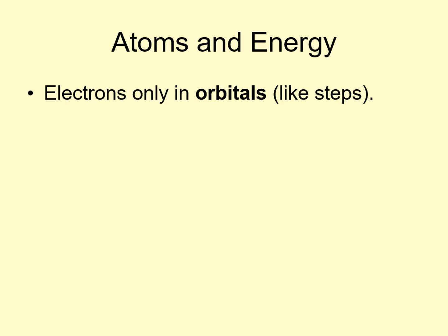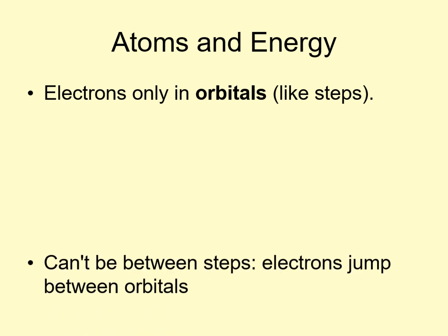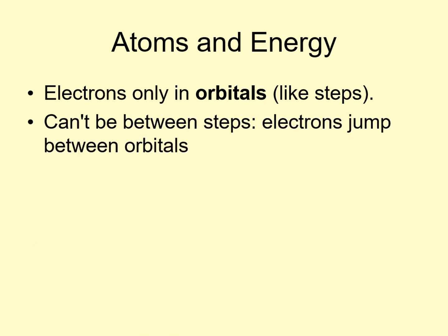If an electron is in one orbital, the only way it can jump to another orbital is by gaining or losing energy. This makes orbitals a lot like steps in a stairwell. You can stand on one step or another, but you can't stand between steps. Similarly, an electron can be in one orbital or another, but it can't be between two orbitals.